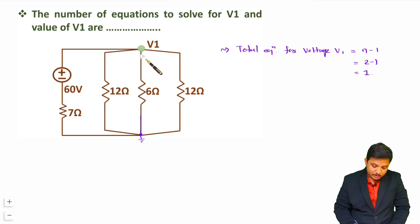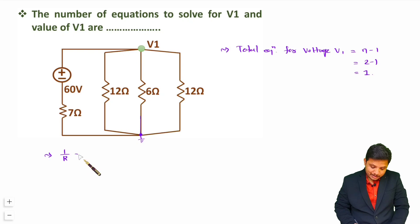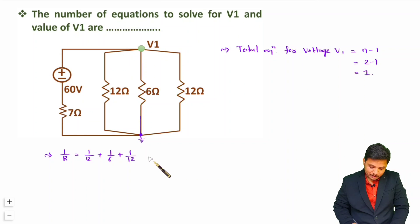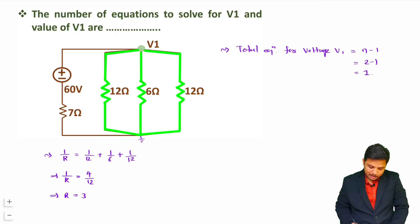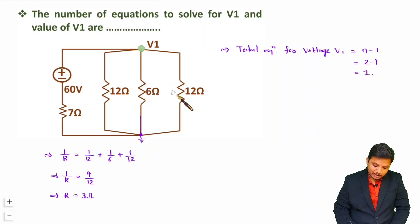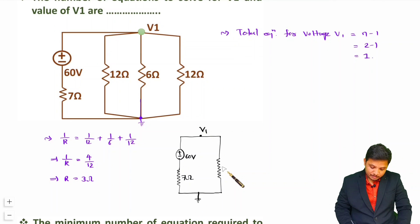Now let us solve v1. Observing this circuit, we see three resistors in parallel. So 1/R equals 1/12 plus 1/6 plus 1/12 per parallel connection. Taking 12 as LCM, that gives 1 plus 2 plus 1 equals 4/12, so R equals 12/4 which is 3 ohms. Instead of the three parallel resistors, we can connect one equivalent resistor of 3 ohms.